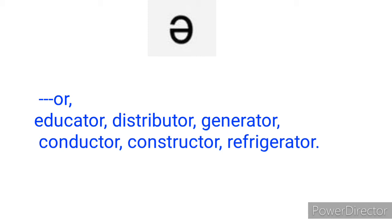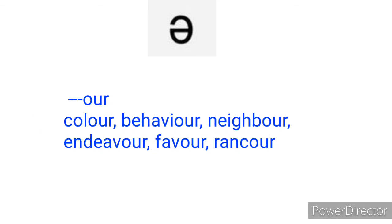You also find the schwa sound in words that have two syllables or more ending in 'o-u-r'. When a word has more than one syllable and ends in 'o-u-r', you should pronounce the 'o-u-r' as the schwa sound 'er': color, behavior, neighbor, endeavor, favor, honor, etc. When a word has two or more syllables ending in 'o-u-r', always pronounce the 'o-u-r' as the schwa sound.